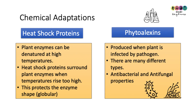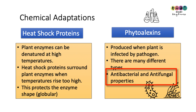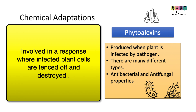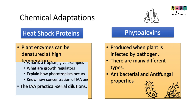Another chemical adaptation is the production of phytoalexins. These chemicals are produced when a plant is infected by a pathogen. There are many different types — some are antibacterial and antifungal. They are involved in a complex response whereby infected plant cells eventually get fenced off and destroyed to prevent the infection from spreading.